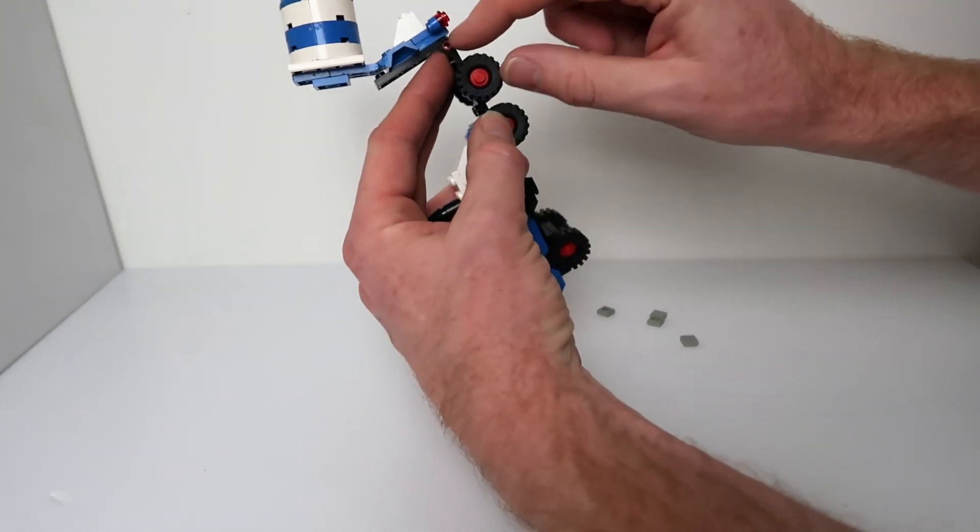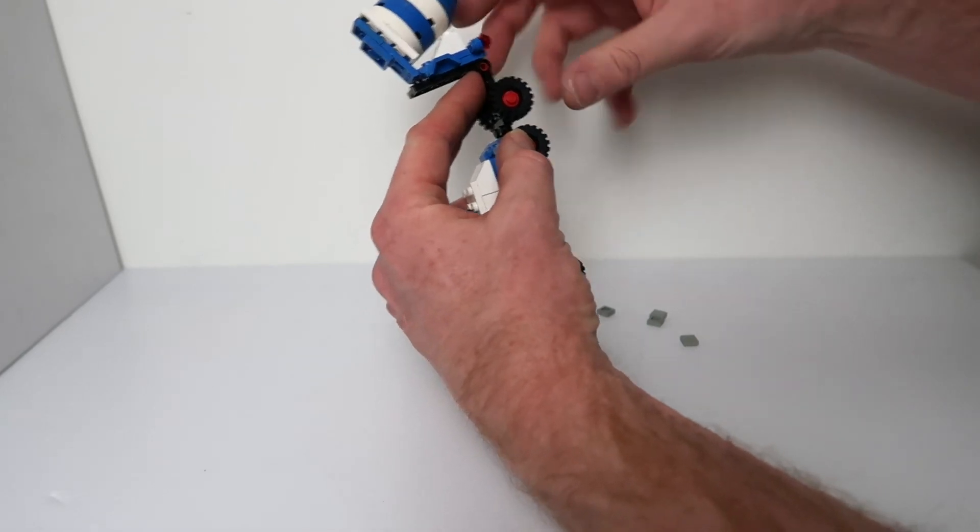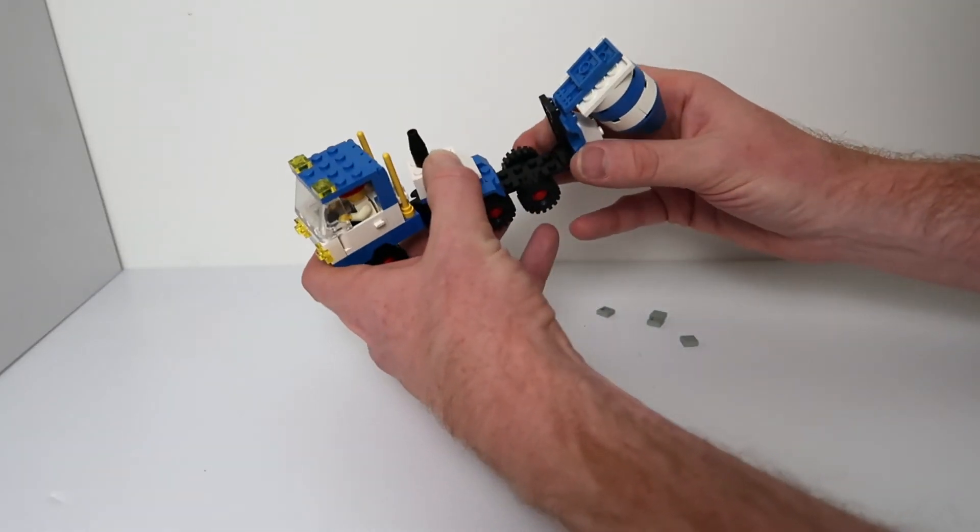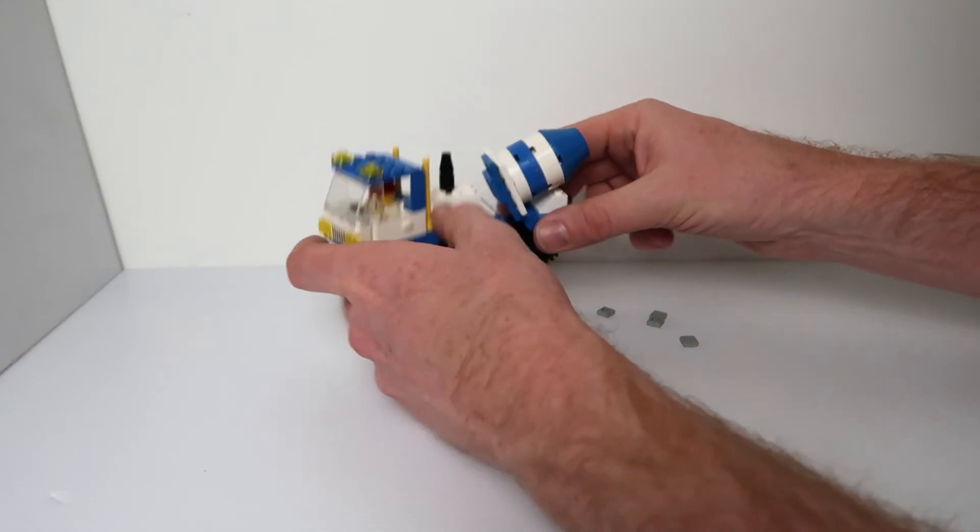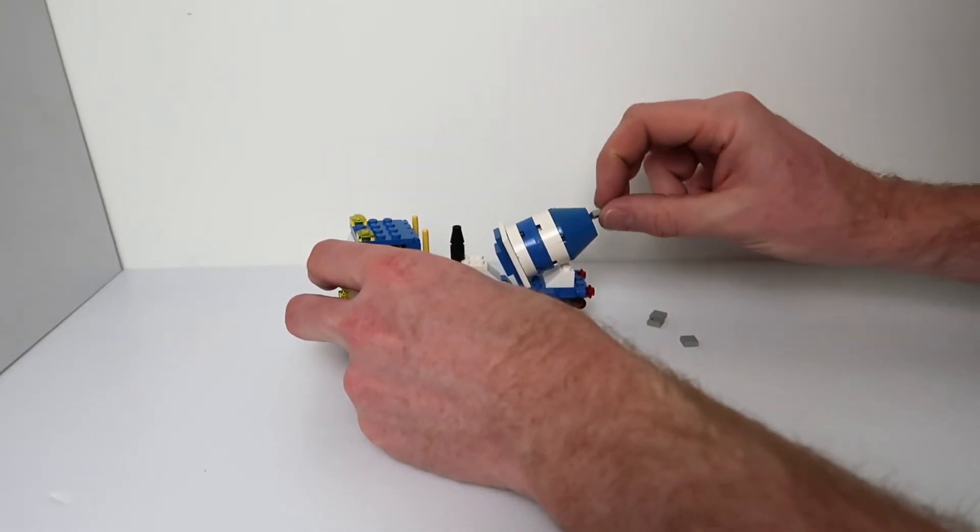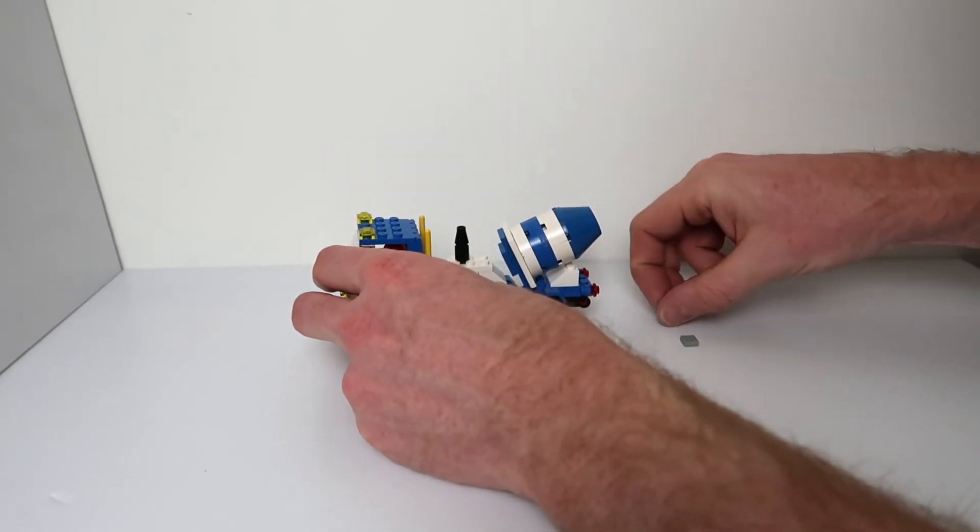Again, like pieces hanging off the end here, it's all stuff you wouldn't see in a current Lego set. But at the same time, this is how they were made and it was quite lovely. Got the cement in there as well.